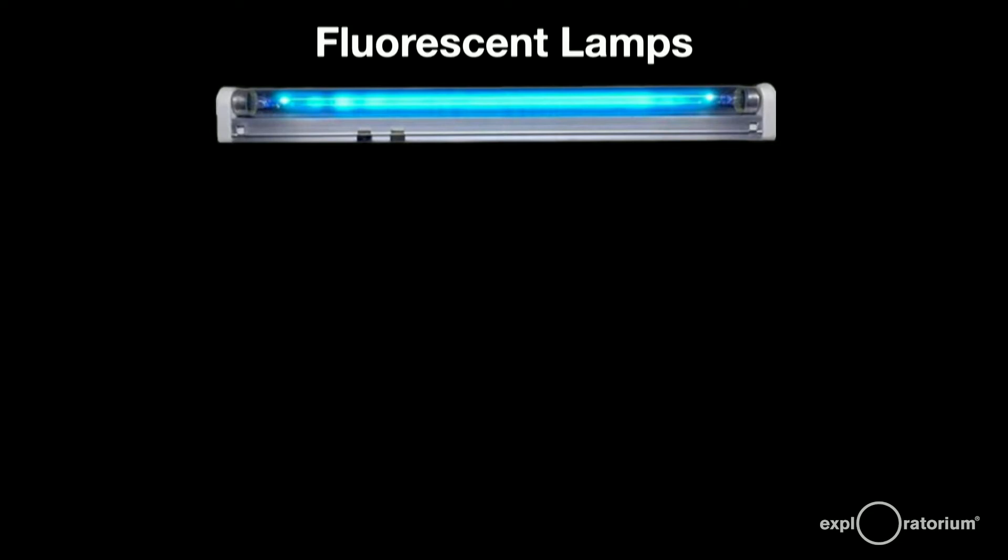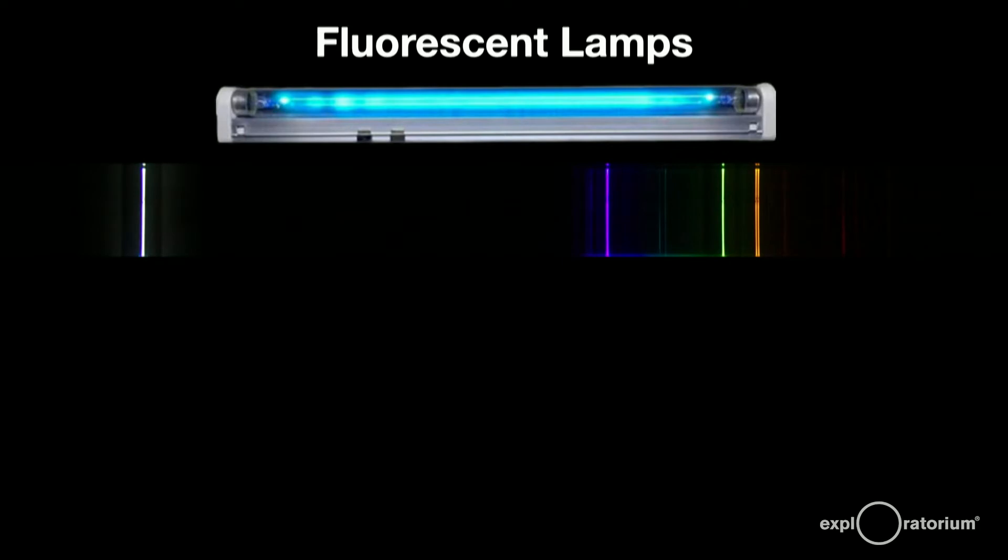If you break apart the colors with a prism or diffraction gratings, you'll see this. The lamp is on the left and the colors it makes, the spectrum, is on the right. Notice the individual pure colors making up this baby blue: namely yellow, very bright green, and a bright violet. You don't see some other very bright ultraviolet colors also given off by the mercury because they're invisible to us, but they're very important.